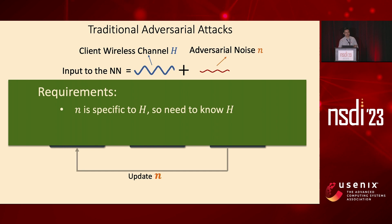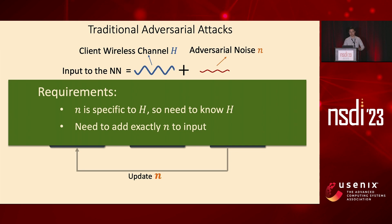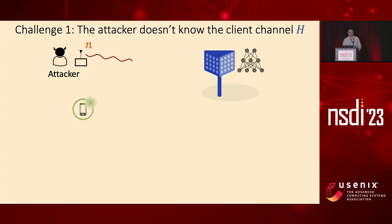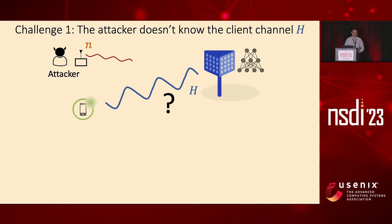This algorithm has two requirements. First, n is designed to be specific to the input H, so we need to know this channel H in order to run the algorithm. Second, we need to add exactly n to the input — a little bit of distortion will completely disrupt this process and make the attack fail. These requirements, however, are hard to achieve and lead to challenges specific to the wireless domain. The first challenge is that the attacker doesn't know the client's channel H, because this wireless channel is measured during communication between the client and base station. The attacker is at a different location, and the channel actually changes over time.